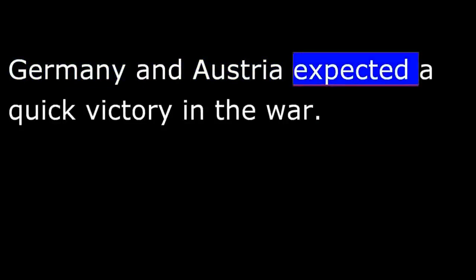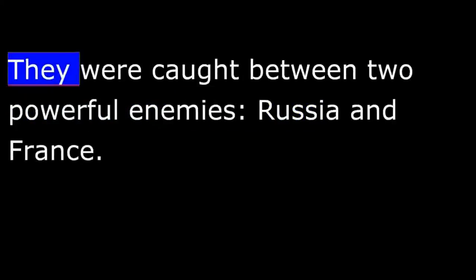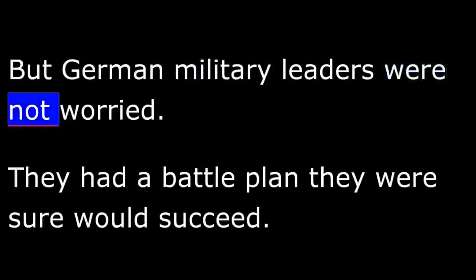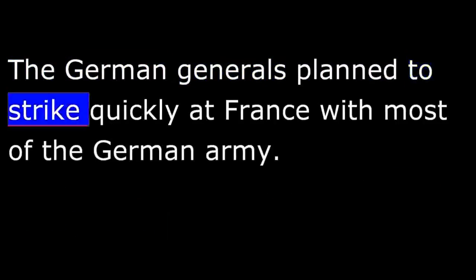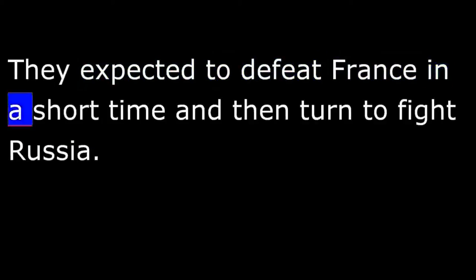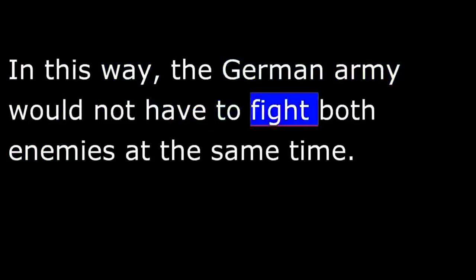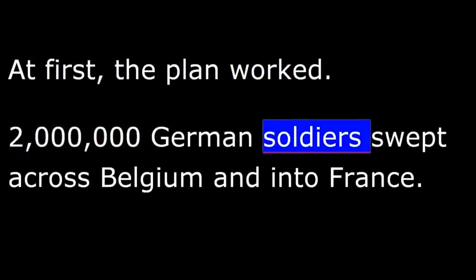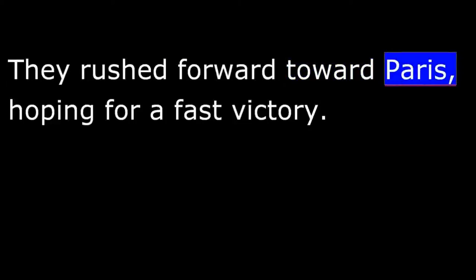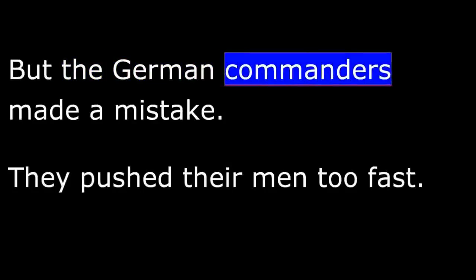Germany and Austria expected a quick victory in the war. They were caught between two powerful enemies, Russia and France. But German military leaders were not worried. They had a battle plan they were sure would succeed. The German generals planned to strike quickly at France with most of the German army. They expected to defeat France in a short time and then turn to fight Russia. Two million German soldiers swept across Belgium and into France, rushing forward toward Paris, hoping for a fast victory. But the German commanders made a mistake.